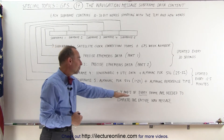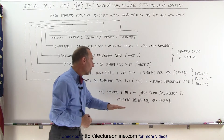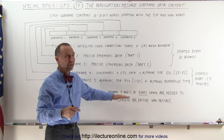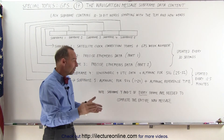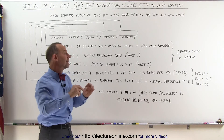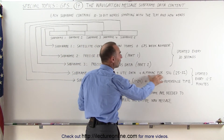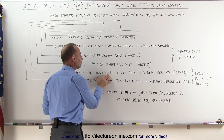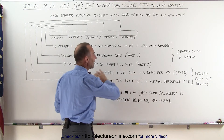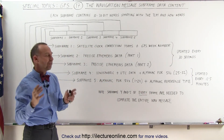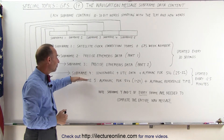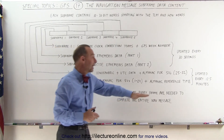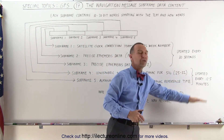Subframes 4 and 5 of every frame are needed to complete the entire navigation message. We need subframes 4 and 5 from all 25 frames — that's a total of 25 times 2, or 50 subframes — to contain the entire almanac information for all space vehicles 1 through 32, the almanac reference time, the ionospheric conditions, and the UTC data, all updated every 12 and a half minutes.